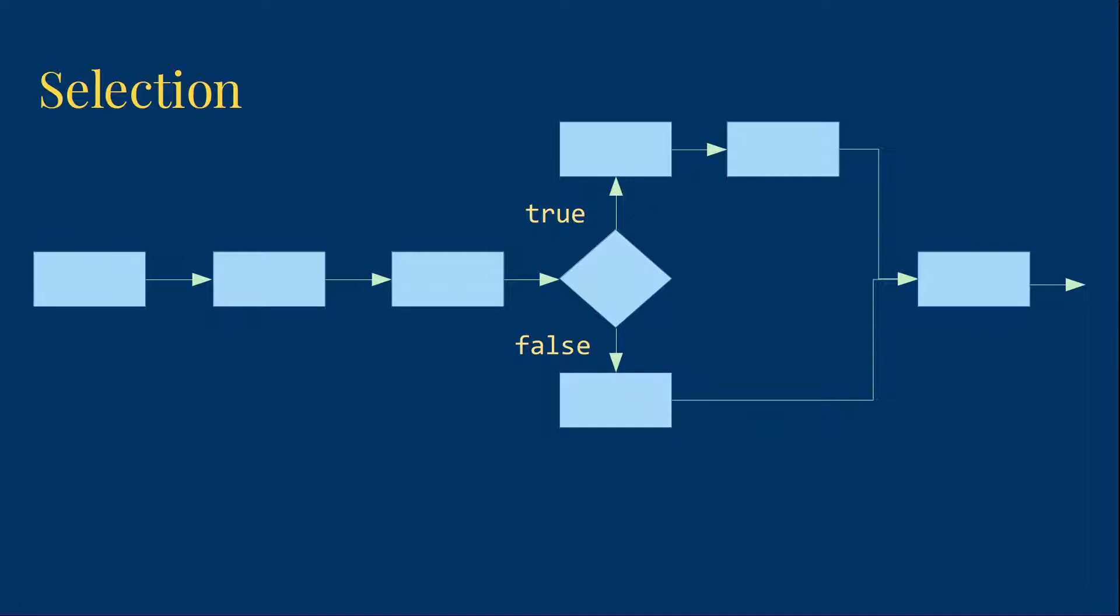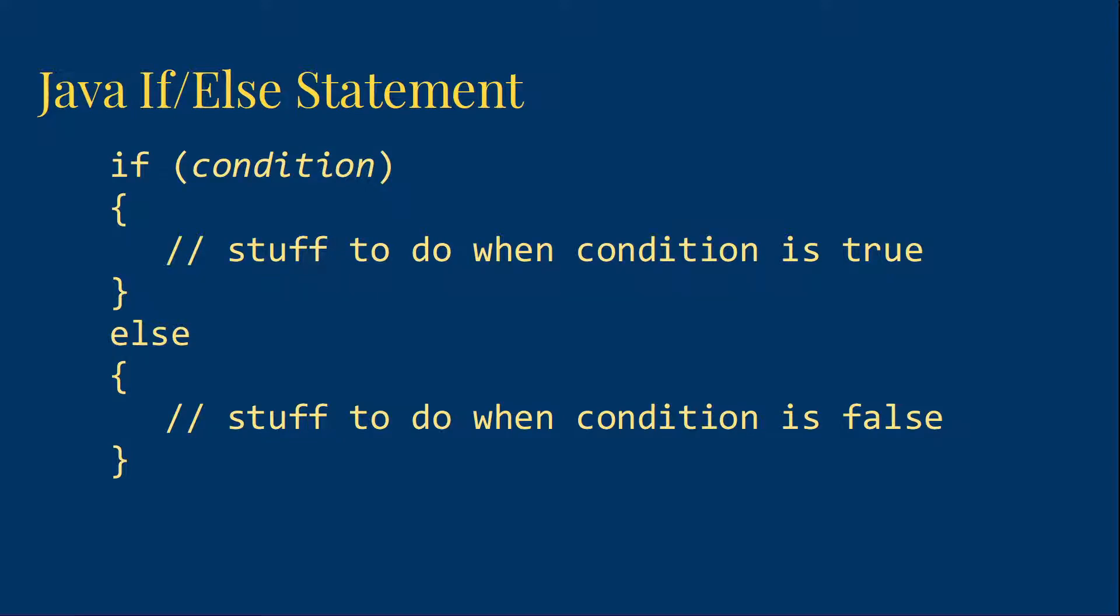So what does all of this look like in Java? We'll have a keyword if in lowercase letters. All of our keywords in Java are generally going to be in lowercase letters. Followed by a condition in parentheses. Parentheses are required. That has to evaluate to either true or false. Then we have a pair of curly braces between which we can put whatever statements we want to do when the condition is true. Then we have the keyword else followed by more curly braces with the statements that should be executed when the condition is false.